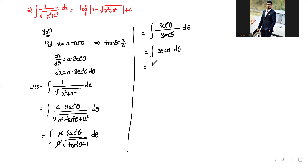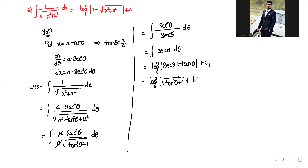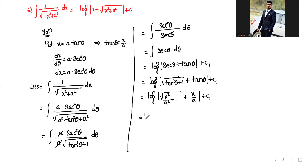Integral secant theta equals log mod secant theta plus tan theta plus c1. Back-substituting: secant theta equals square root of tan square theta plus 1, so we write log mod square root of tan square theta plus 1 plus tan theta plus c1. Substituting tan theta equals x by a and secant theta in terms of x and a: log mod square root of x square by a square plus 1 plus x by a plus c1.